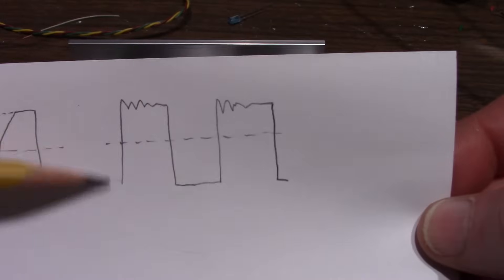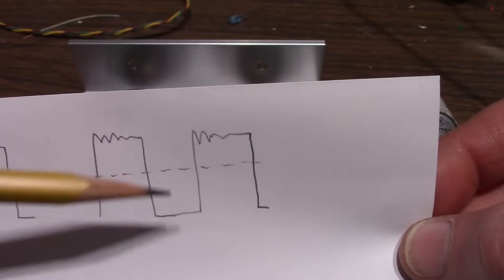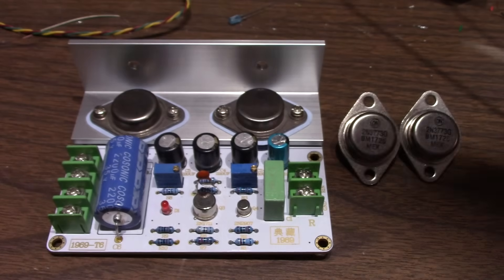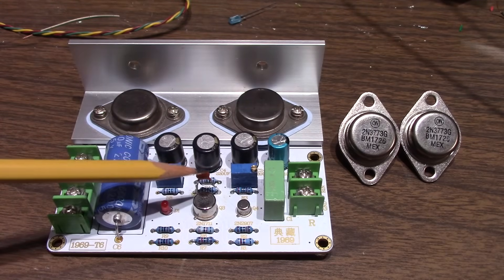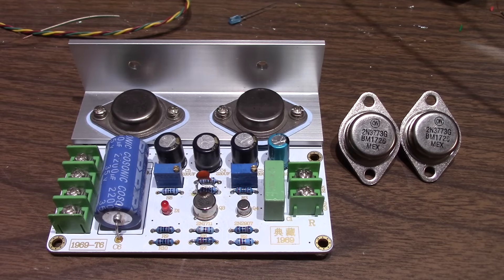But when I did that the step response looked pretty good. Except now I was getting a ring on the positive edge of the square wave. So what I ended up doing is putting this capacitor in parallel with the feedback resistor here and that took care of that.